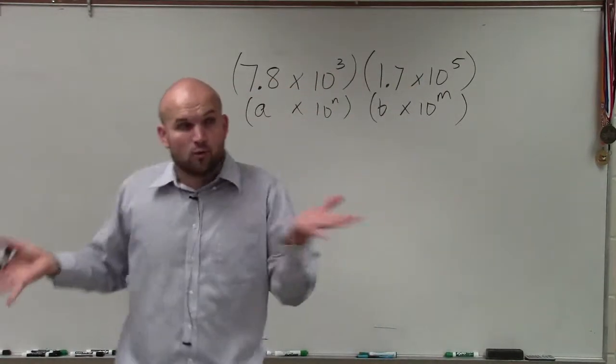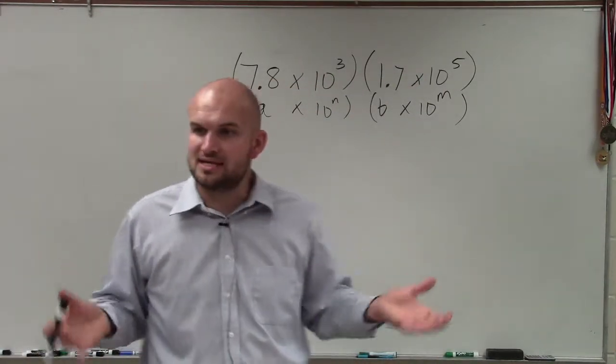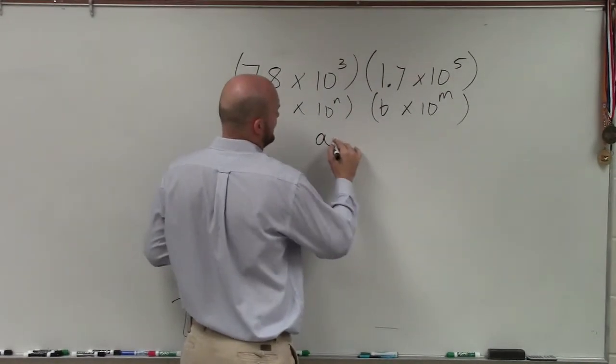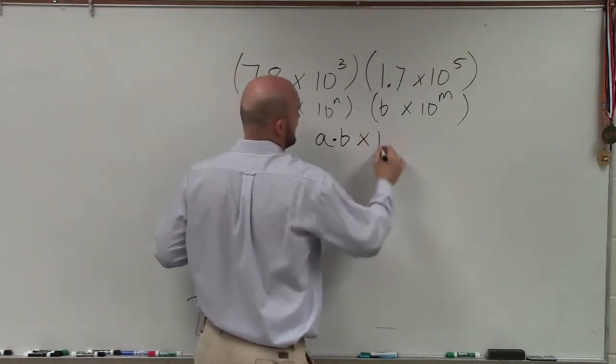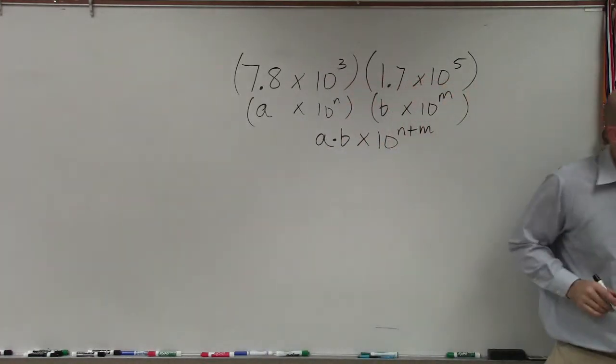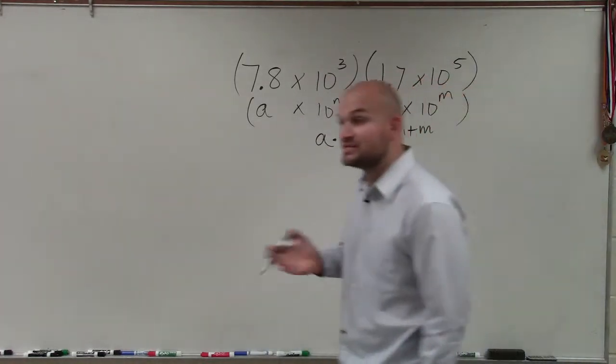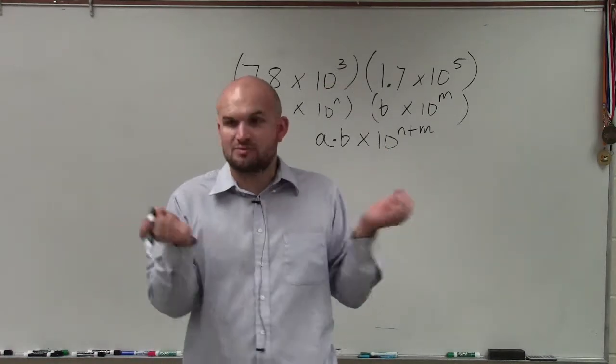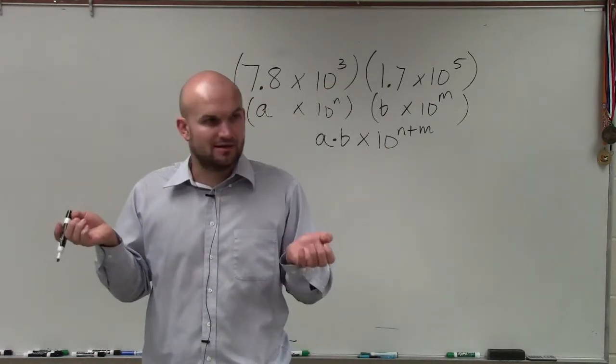It really doesn't matter what my values are when I'm multiplying scientific notation. All I'm simply going to do is a times b times 10 to the n plus m. The adding of the n plus m comes from our properties of exponents. If you guys remember, when we multiply two exponents, we add the powers. Do you guys remember that?